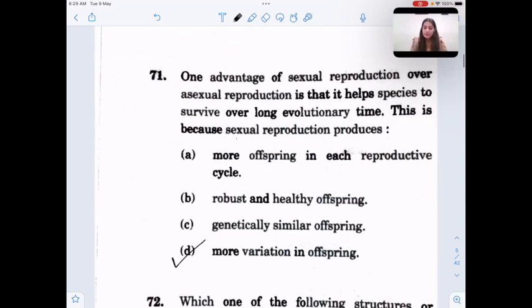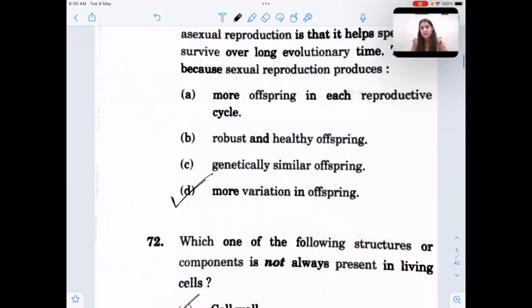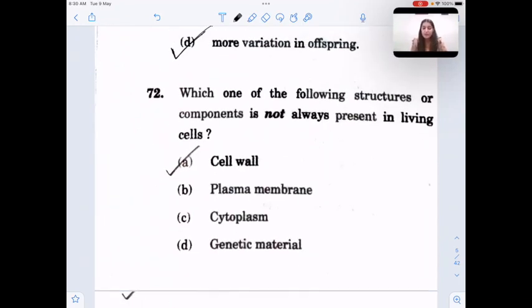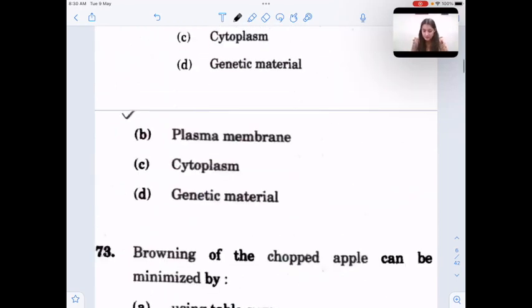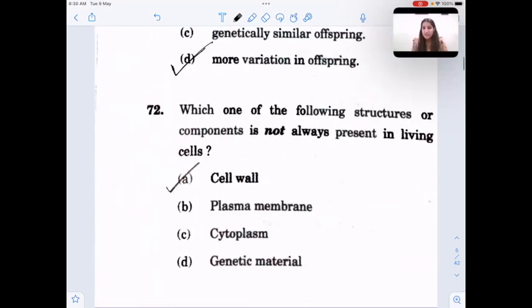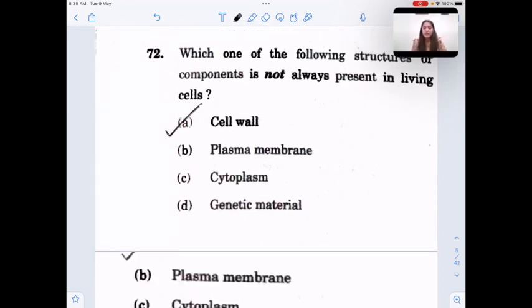One advantage of sexual reproduction over asexual reproduction is that it produces more variation in the offspring due to recombination because DNA of two parents is involved, whereas in asexual, one parent is involved. So the offsprings are clones of their parents. Which structure or component is not always present in living cells? We know that animal cells lack cell wall, so this is the answer.